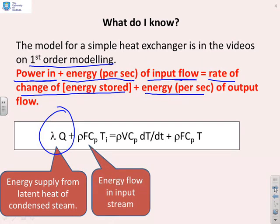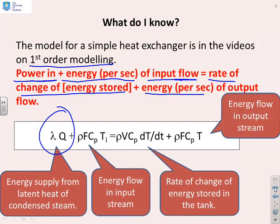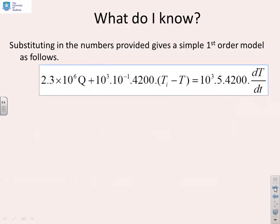The energy flow in the input stream is ρ × flow rate × Cp × temperature of the input flow. The rate of change of energy stored in the tank is ρVCp dT/dt and the energy flow in the output stream is ρfCp × T. Now if we put in all the numbers we were given at the outset, you end up with this equation here.